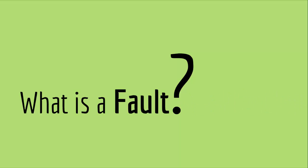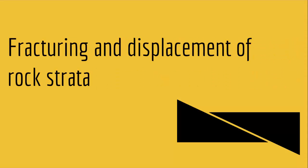So what is a fault? A fault is fracturing and displacement of rock strata. If you have a rock strata and it fractures and the broken parts are displaced or moved, then that is called a fault. Just like you see here — we have this rock strata, it was fractured and the broken parts were displaced. This one moved up, this one moved down — this is a fault.